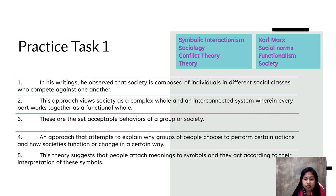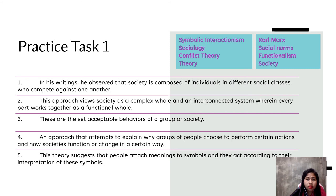For Practice Task 1, you need pen and paper. Identify the terms being referred to in the following statements, choosing answers from this box: symbolic interaction, sociology, conflict theory, theory, Karl Marx, social norms, functionalism, and society. You can pause the video, answer in your paper, then resume to check. The answers are: number one — Karl Marx; number two — functionalism; number three — social norms; number four — theory; number five — symbolic interaction. If you got five points, congratulations! If not, you can try to answer again and check your work.